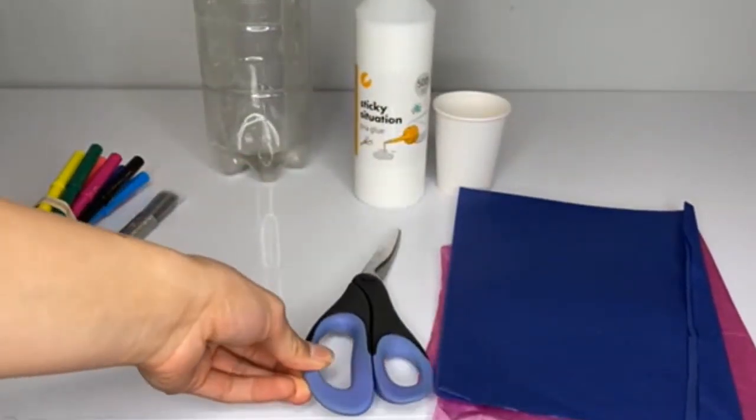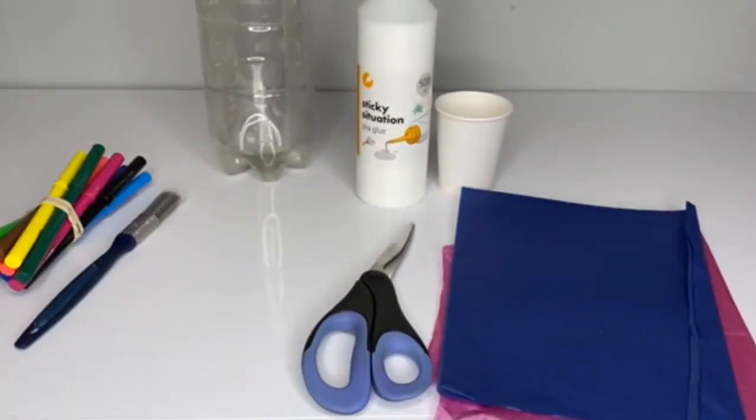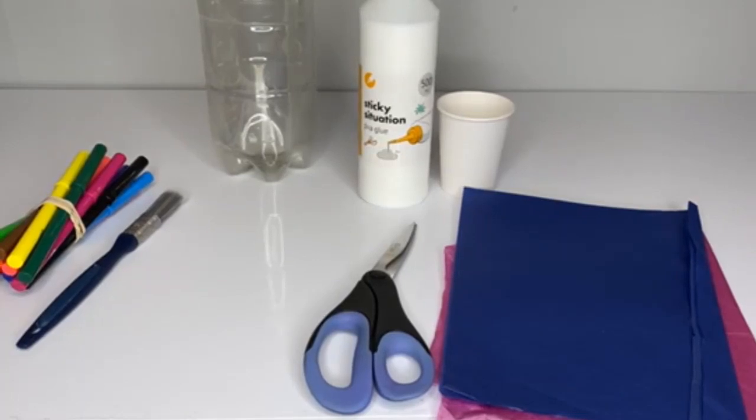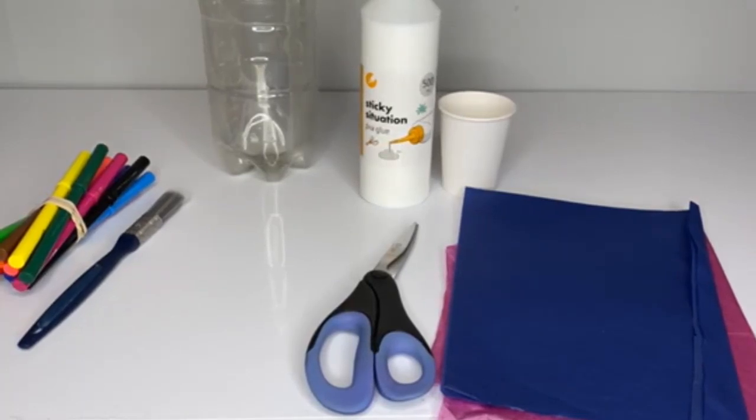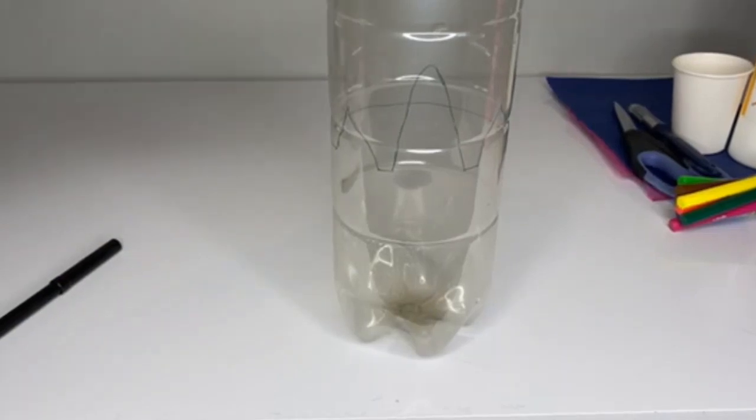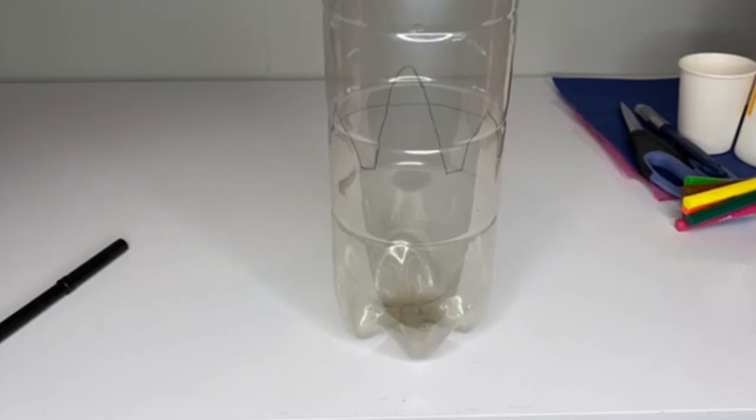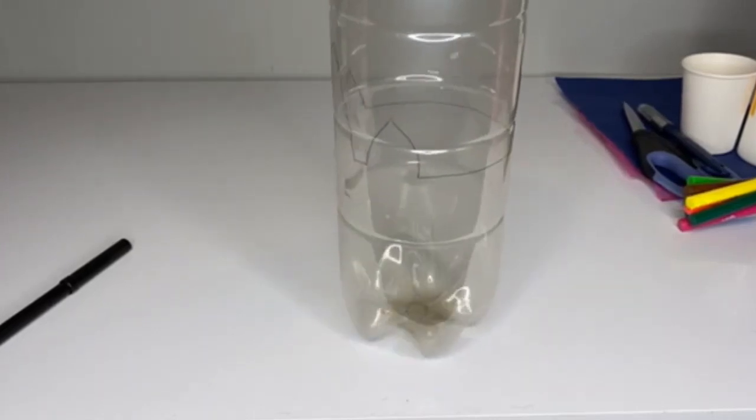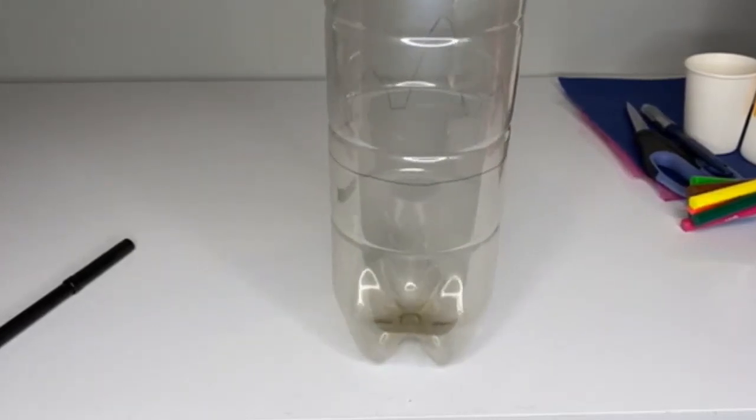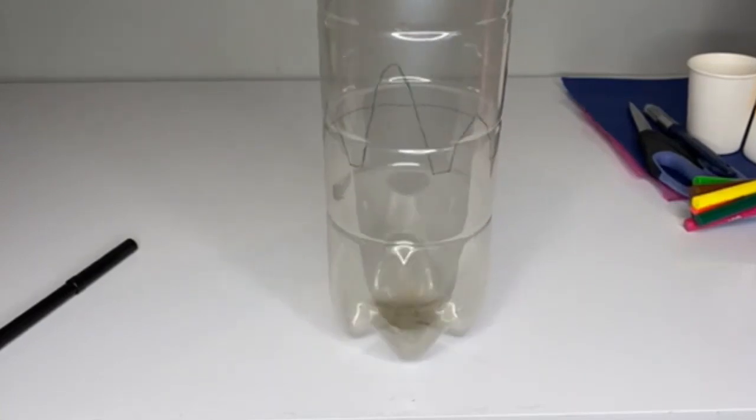Remember, if you are using scissors, please make sure you have an adult with you to help and make sure you are holding them correctly. First you will need to take your empty bottle and draw on the outline of your character using a black marker pen. Today I will be making a unicorn, however you can create any character you wish.